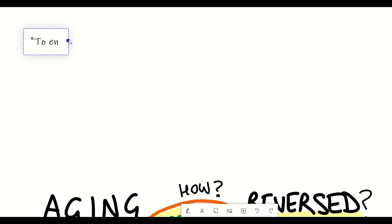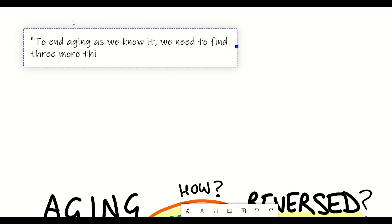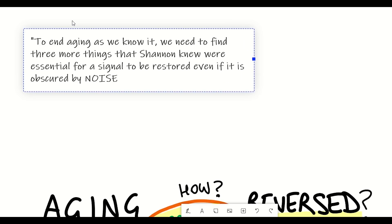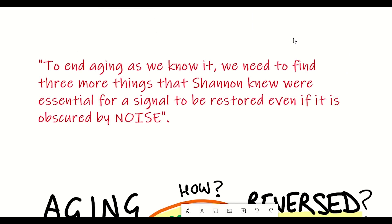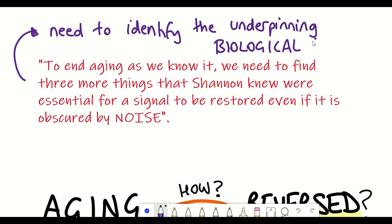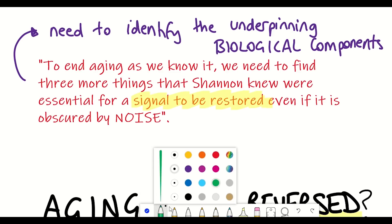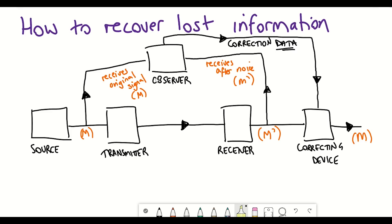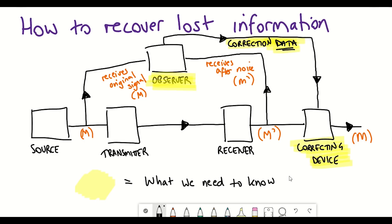To quote David Sinclair in Lifespan: 'To end ageing as we know it, we need to find three more things that Shannon knew were essential for a signal to be restored even if it is obscured by noise.' The key point David is making is that if we can identify the biological components that make up these three correction device components, it gives us better insight into how we can restore the loss of information that occurs during ageing. We'll come back to this model at the end of the video, as it provides a simple framework to explain a complicated topic.